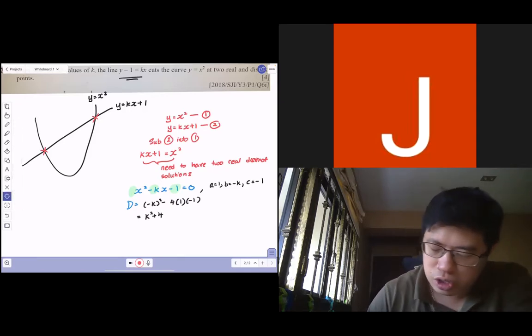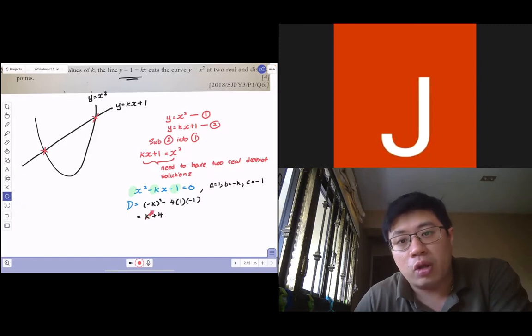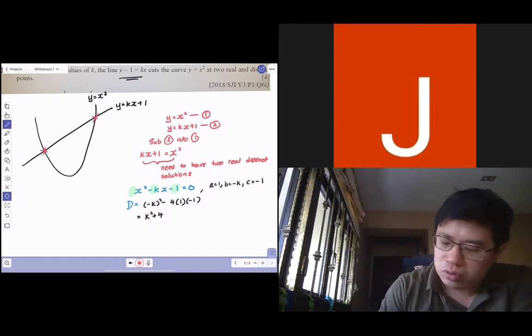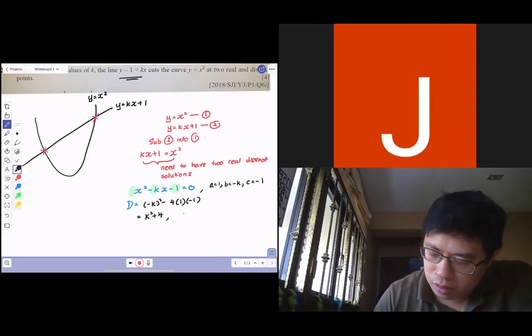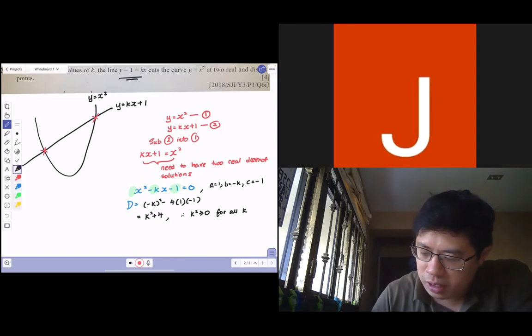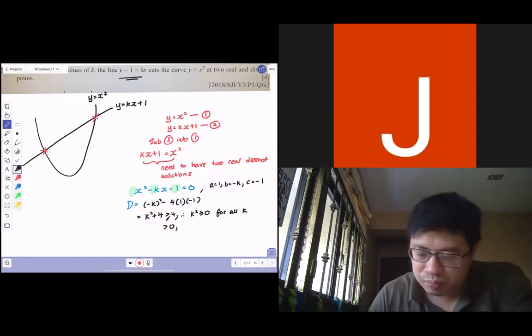This is a positive function squared. I would say positive non-negative function, k squared plus four. Definitely, you know that k squared itself is always more than or equal to zero for all k. So definitely, this k squared plus four is more than or equal to four, which is also more than zero.